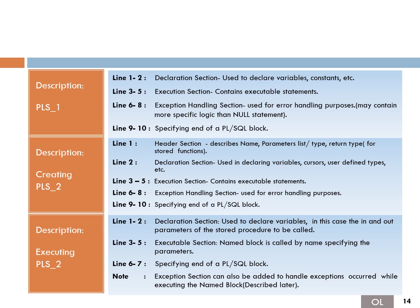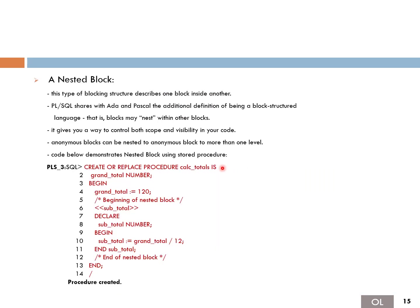Nested blocks are blocks within other blocks. As shown, a procedure can contain an inner declared section with its own begin/end block including an execution section and exception handling. The inner part is the nested block, and the outer part is the main block — together forming a nested block structure.